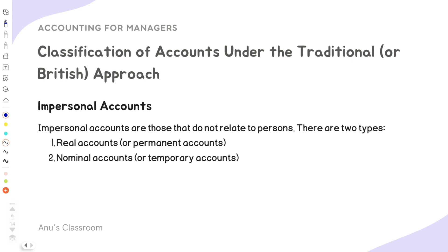Impersonal accounts are either real accounts or nominal accounts. Real accounts means permanent accounts, and nominal accounts means temporary accounts. Real accounts will not start with zero at the beginning of every accounting cycle — they will have some amount transferred from the previous cycle. Temporary accounts, on the other hand, will be made zero and readjusted at the end of each accounting cycle, starting fresh. They accumulate throughout the cycle and are summed up and transferred when closed.